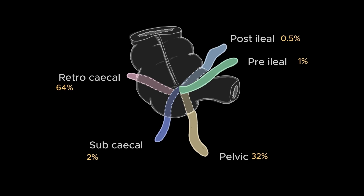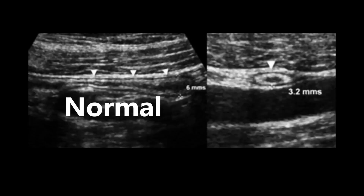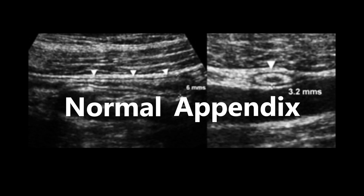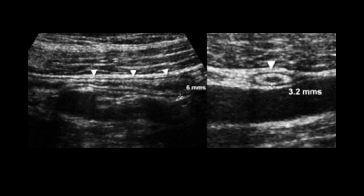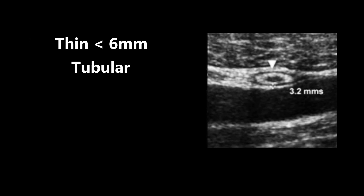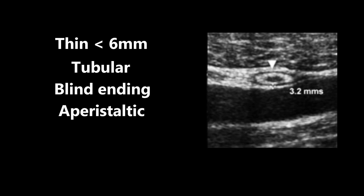The cecum is usually filled with air and it obscures the appendix behind it. The normal appendix is typically described as a thin — less than 6 millimeters in diameter — tubular, blind-ending, aperistaltic, and compressible structure.